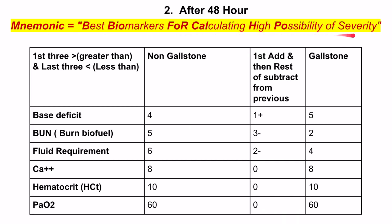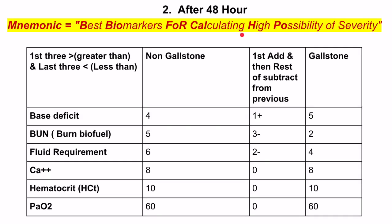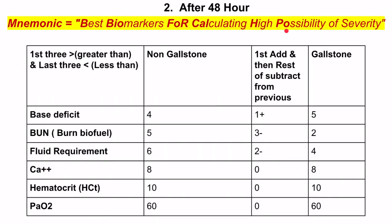After 48 hours of presentation, the mnemonic for the best biomarkers calculating high possibility of severity is: B for base deficit, B for burn, B for fluid requirement — burn means fluid requirement — C for calcium, H for hematocrit, and P for PaO2.